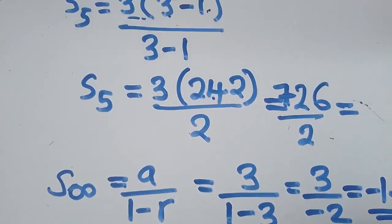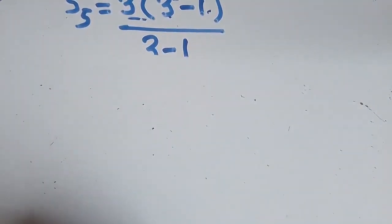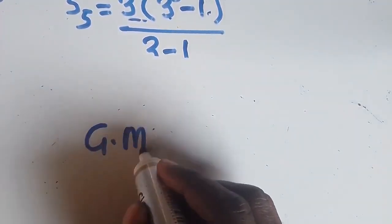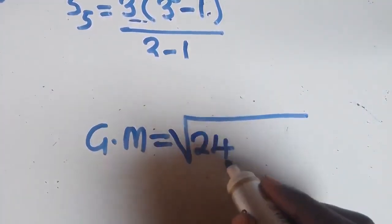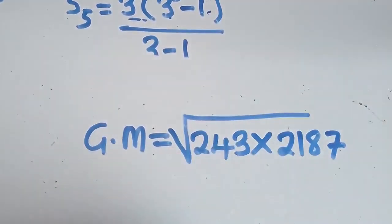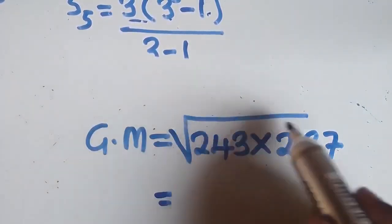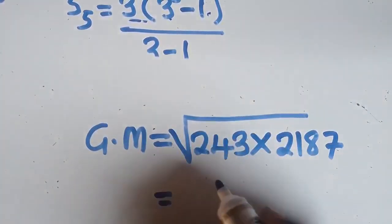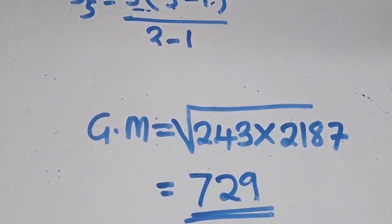We move to the last question: find the geometric mean. The geometric mean is found by putting the two given numbers under a square root — so it equals √(243 × 2187). When you multiply and take the square root, the answer you must get is 729. This is how you find the geometric mean.